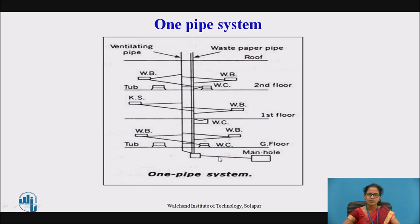This vertical pipe is directly connected to the drainage system. In multi-storied buildings, the lavatory blocks are placed on different floor levels, and all discharging waste water is commonly collected in this single vertical pipe, which is directly connected to the drains. This is the one pipe system.